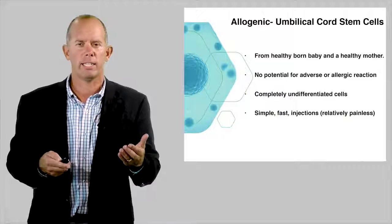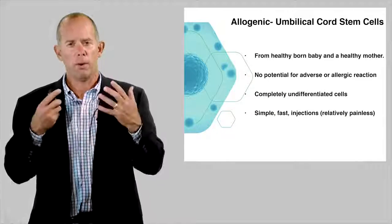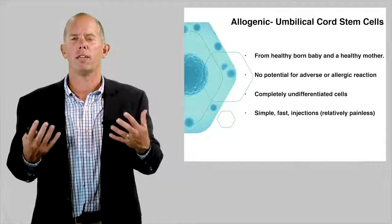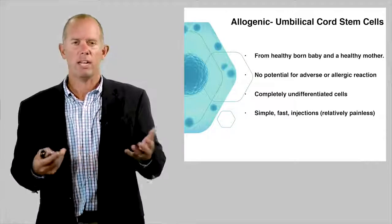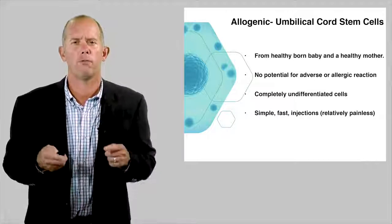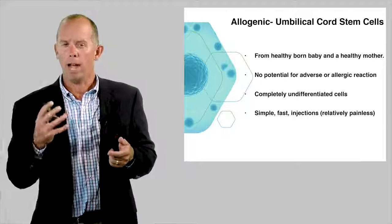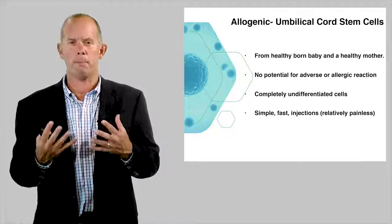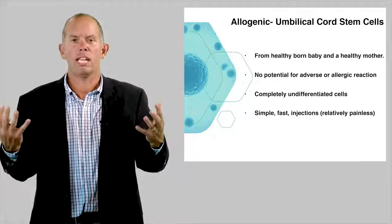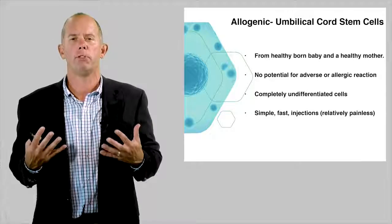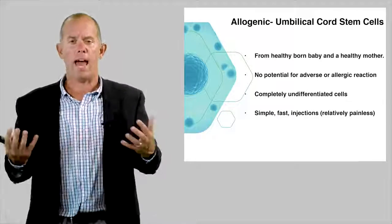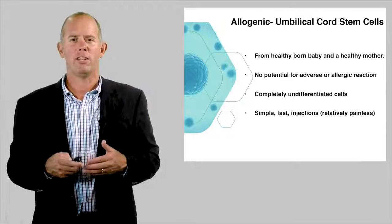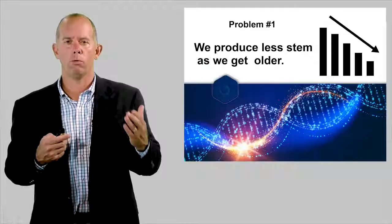So here's what happens. We're using allogenic cells. These are donated umbilical cord stem cells. They're from a healthy baby, healthy mom. There's been over 30,000 injections in the last year. There's no potential for adverse or allergic reaction. Why? Because the cells are undifferentiated. And what does that mean? The immune system has not tagged them yet. They're going to do whatever your body needs them to do.